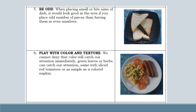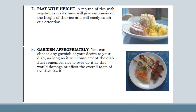Number 5: Be odd. When placing small or bite-size pieces of dish, it would look better to place an odd number of pieces. Number 6: Play with color and texture. We cannot deny that color will catch your attention immediately. Green leaves or herbs can catch our attention, same with sliced red tomatoes or as simple as a colored napkin. Number 7: Play with height. A mound of rice with vegetables on its base will give emphasis on height and will easily catch our attention. Number 8: Garnish appropriately. You can choose any garnish of your desire as long as it will complement the dish. Just remember, do not overdo it as this will damage or affect the overall taste of the dish itself.